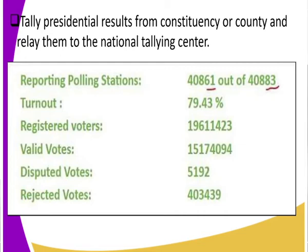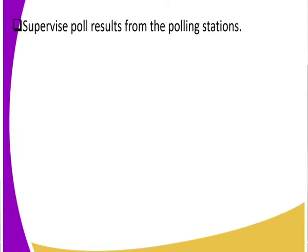Finally, returning officers get to supervise poll results from the polling stations. Remember, voting starts from the polling center. These are the people responsible for supervising the poll results from the polling stations to the constituency polling center, and from there they relay the votes to the national tallying center.